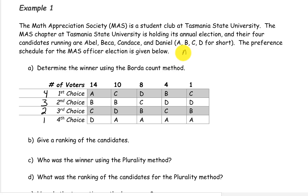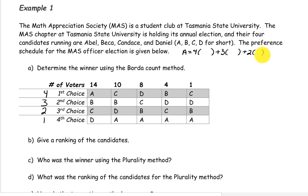For candidate A, we're going to have four times the number of votes they had in first place, plus three times the number of votes they had in second place, plus two times the number of votes they had in third place, plus one times the number of votes they were in last place. That will give us the total number of Borda points they have.